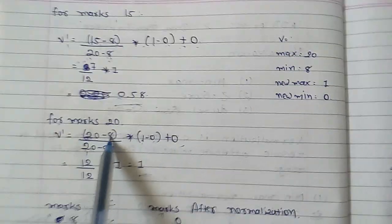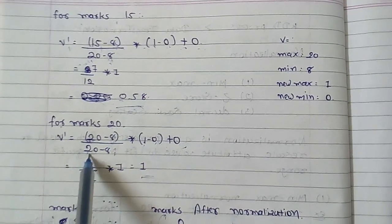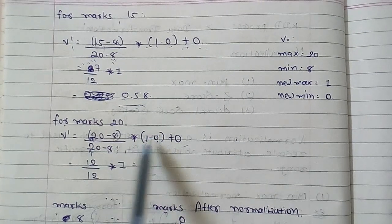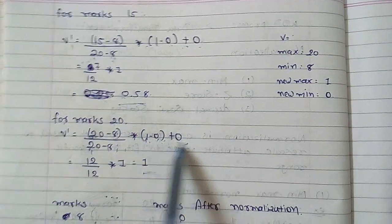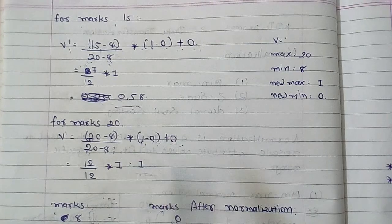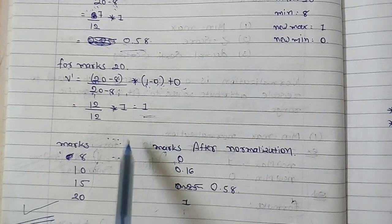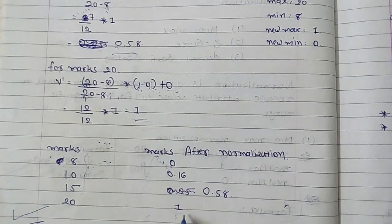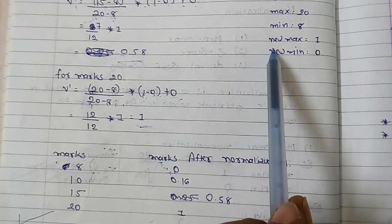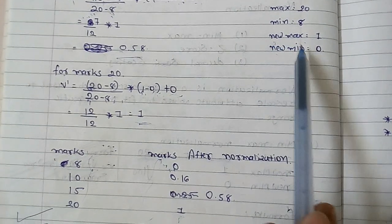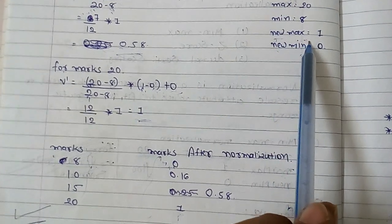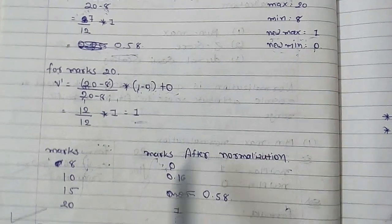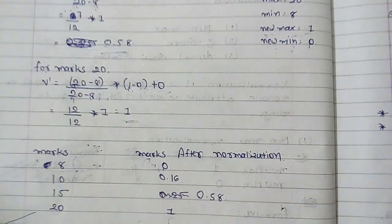For marks = 20: (20 - 8) / (20 - 8) × (1 - 0) + 0, so you will get 1. After normalization, the new range will be between 0 and 1, because we considered new maximum marks as 1 and new minimum marks as 0. So all answers fall between 0 and 1. Thank you for watching.